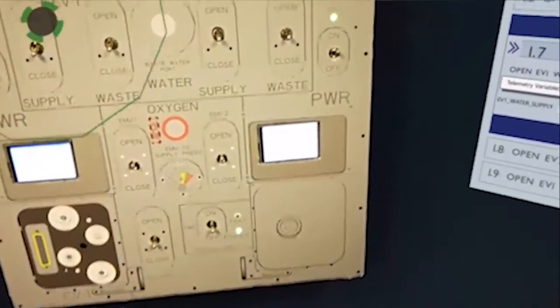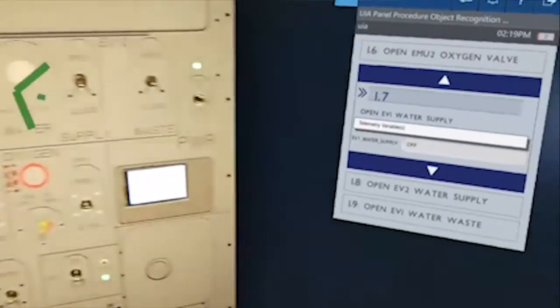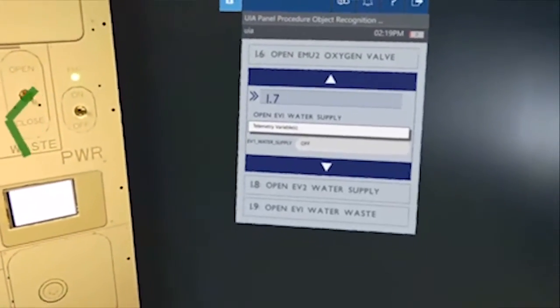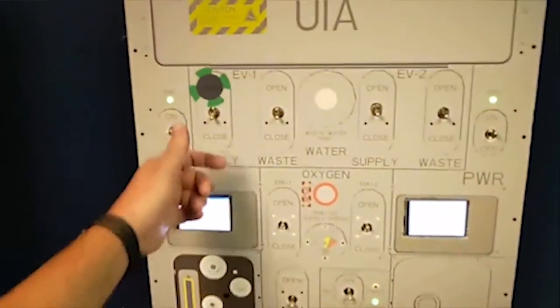The radicals are showing you exactly where you need to be, vectoring the user into a precise location. Open EV1 water supply. I'm going to open that up.